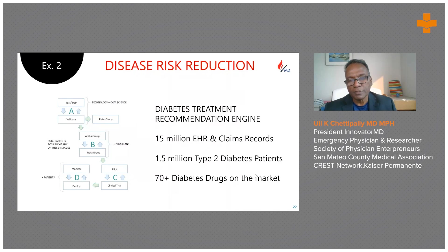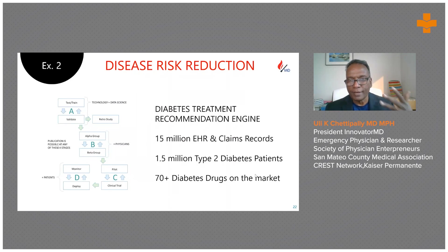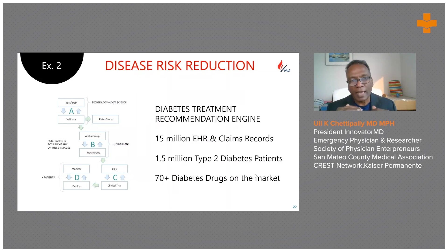This is a project we did in a health system. They had 15 million electronic health records and claims records. Out of those, 1.5 million patients had type 2 diabetes. We split this population to see what medications they were on, compared that with their hemoglobin A1C, and identified which patients were under good control. For example, if 50% of patients on drug A were under good control, we then looked back at the characteristics of those 50% responding to that drug.